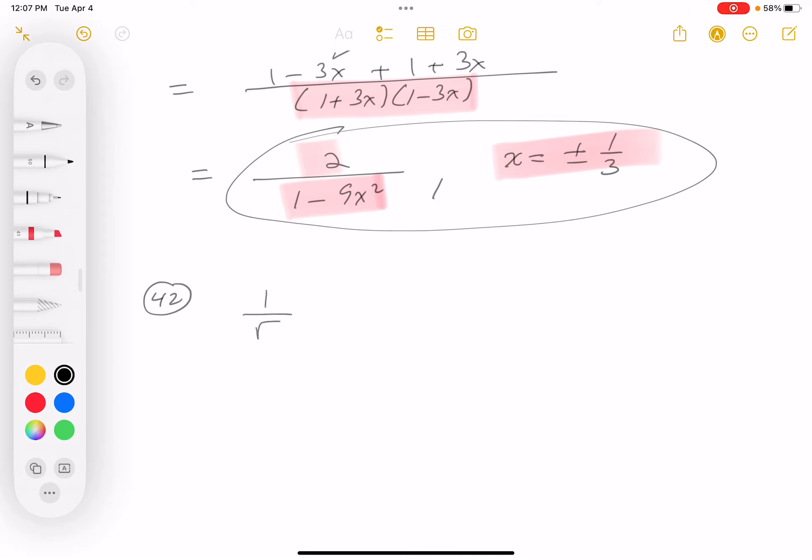So I got 1 over root x plus 1 over root x plus 1. What do you want to do with that?